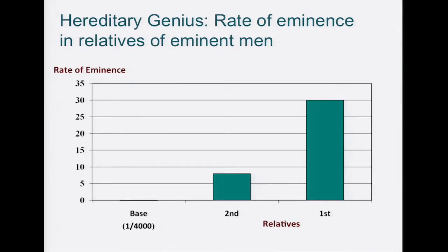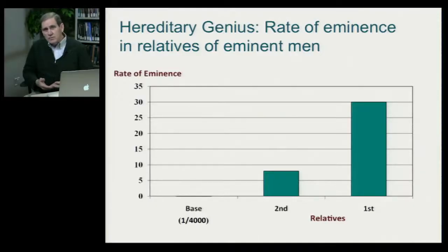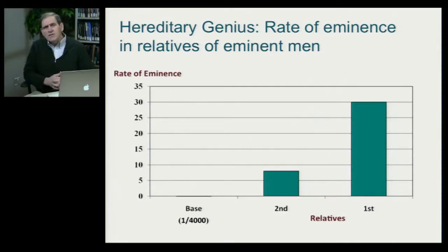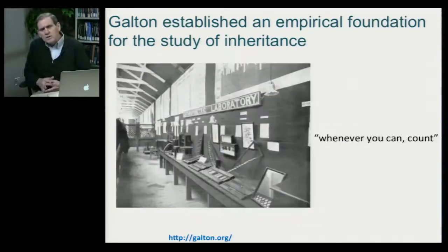Eminence ran in families. Galton was no fool — he recognized that eminence could run in families not only because of nature, what we today call genetics, as well as nurture, their environment. But he had counter-arguments against the explanation that the familial aggregation of eminence was simply a function of nurture. For example, he used case studies like Michael Faraday — the most eminent physicist of the 19th century, who developed field theory, yet grew up in poverty and was self-taught. Galton argued, how could you explain someone like Michael Faraday through a nurture argument?